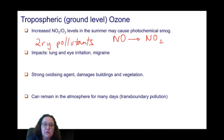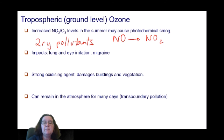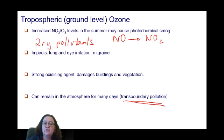Ozone can remain in the atmosphere for many days. Lack of wind is a huge influencing factor in the formation of photochemical smog, because the chemicals will not be blown away. But once the ozone is formed, it can remain in the atmosphere for many days and can be associated with transboundary air pollution problems, because it is blown away and travels to somewhere else once it has formed.